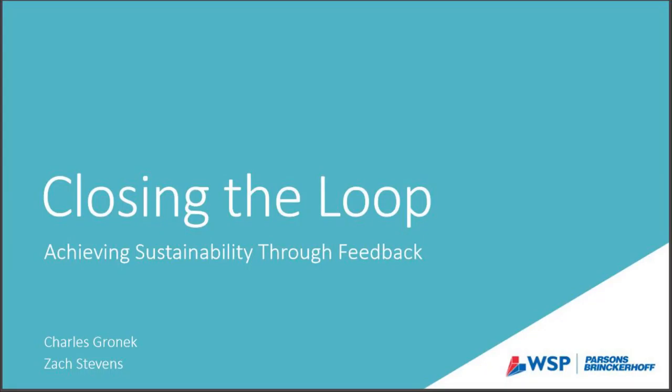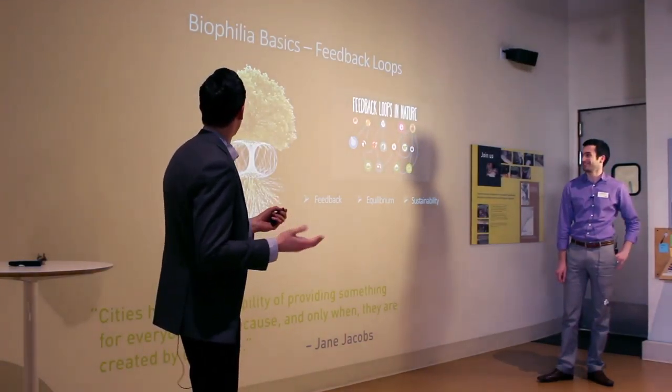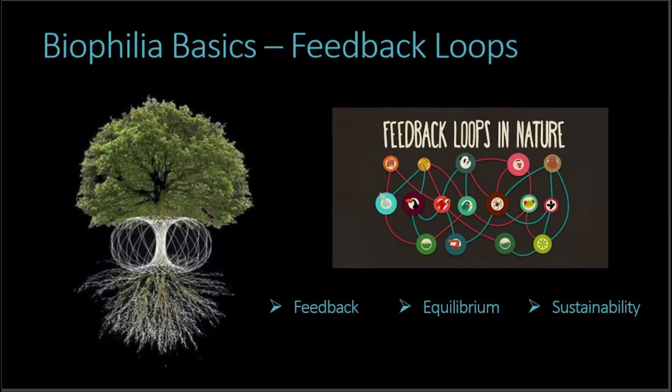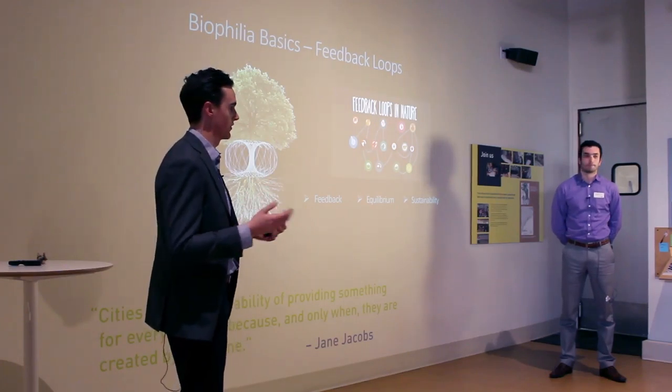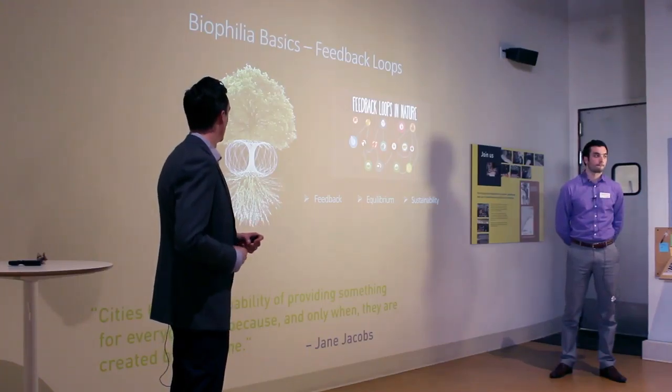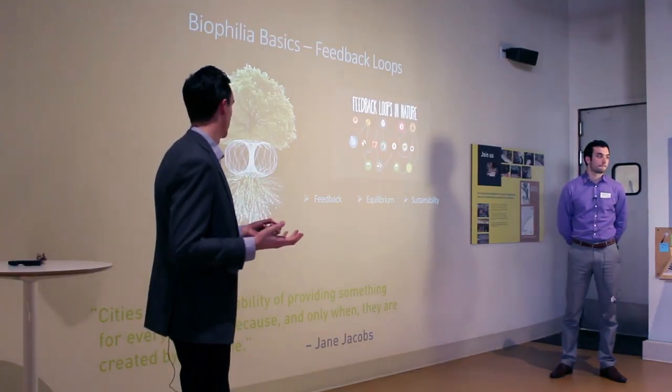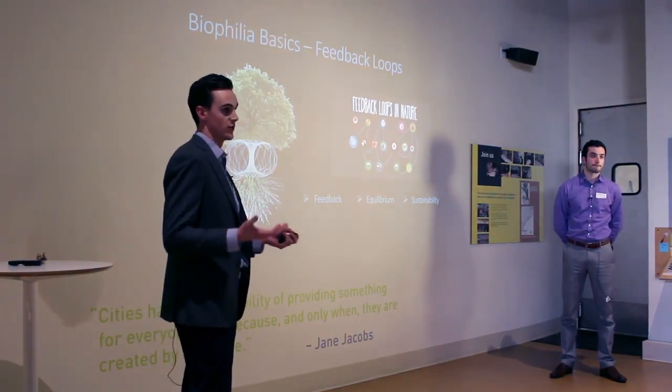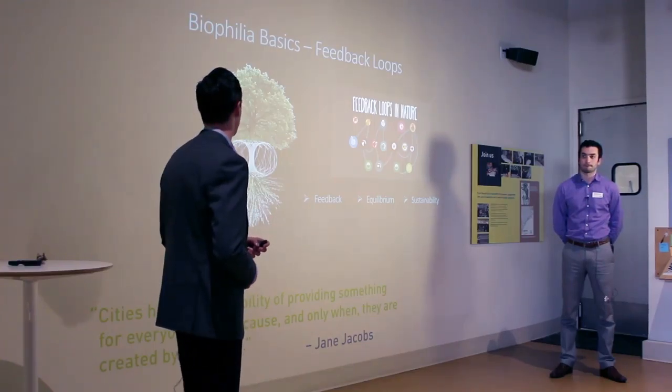Today we're going to be talking about closing the loop and how to achieve sustainability through feedback. We talk about biophilic design and architecture a lot, and one of the most basic biological structures is that of the feedback loop. Cells or organisms will exchange data with their environment and reach equilibrium that way, and essentially that is the goal of sustainability — reaching equilibrium with our environment.